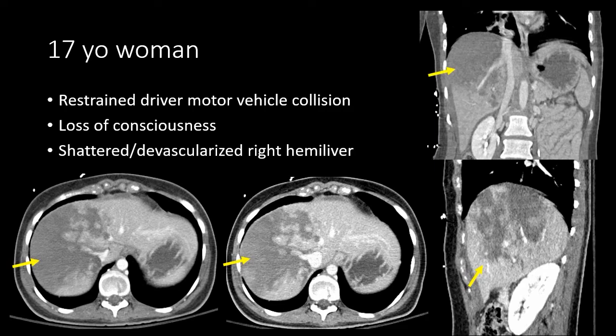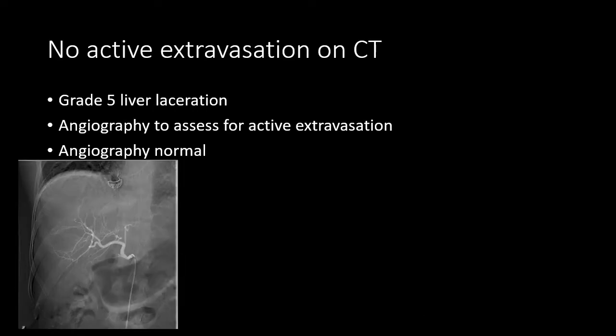This is again a very high grade injury — a shattered or devascularized liver with parenchymal disruption and central venous involvement, classified as a grade five liver laceration. Due to the extent of parenchymal disruption, this patient was sent to angiography to assess for active extravasation that may not have been detected on CT. The angiography was normal and the patient did not require operative management.